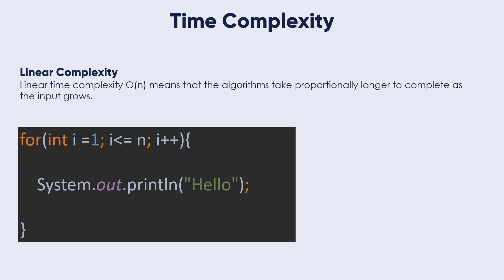If I enter n 10 times, this printing hello will be printed 10 times. If I enter n equal to 1 million, this system.out.println line will be executed 1 million times. Here we depend on the n, on the value of n. As n value increases, the executed statements increase. And this means that the algorithms take proportionally longer to complete as the input grows.